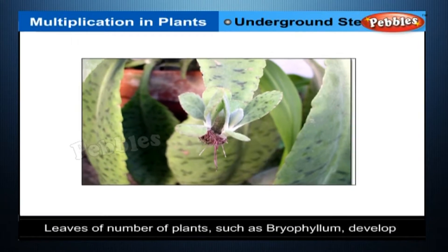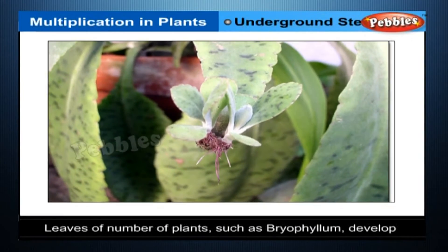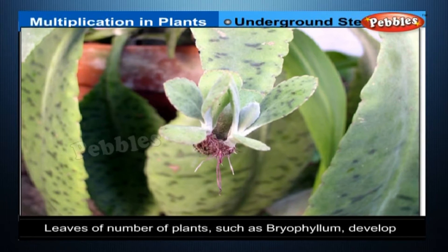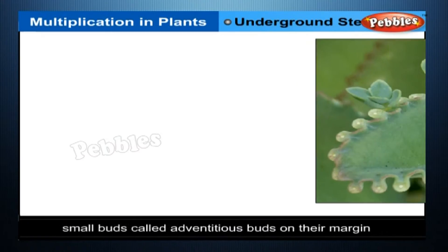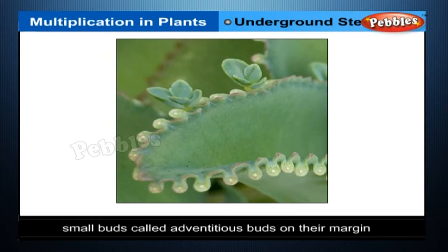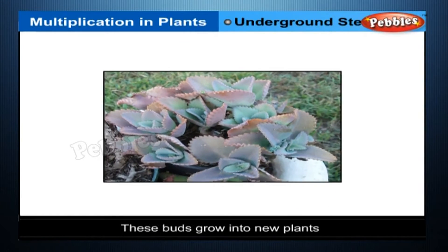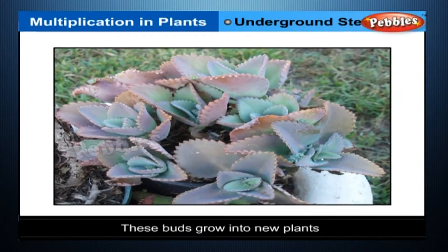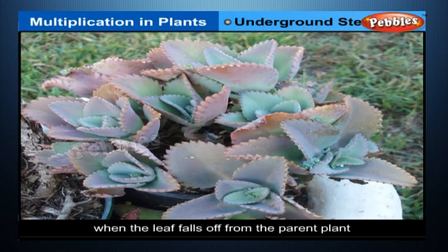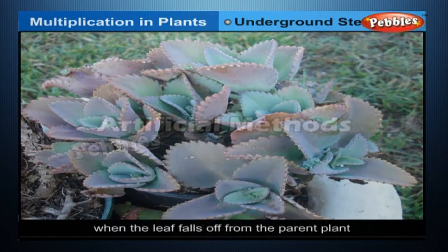Leaves: leaves of a number of plants such as Bryophyllum develop small buds called adventitious buds on their margin. These buds grow into new plants when the leaf falls off from the parent plant.